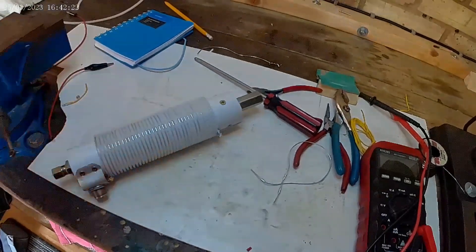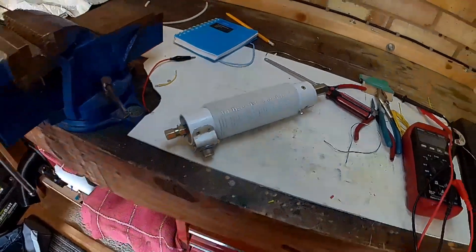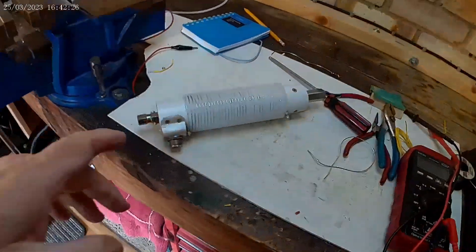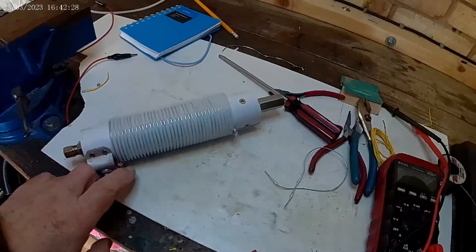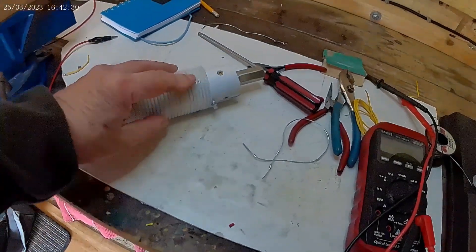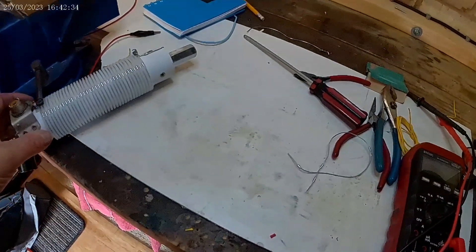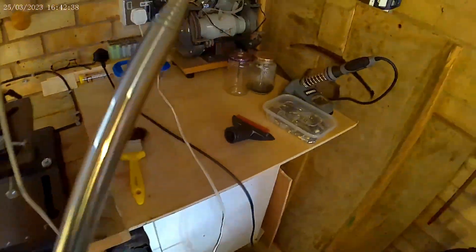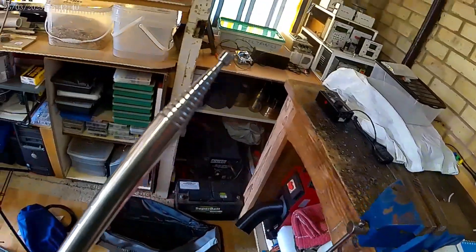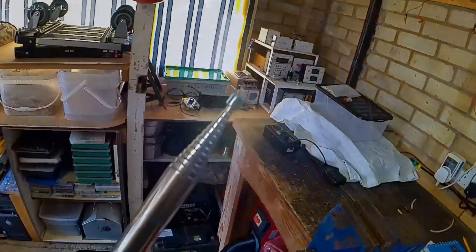For the 20 meter band, I've discovered you don't really need any taps. You just short it out, short the coil out completely, and then you just slide the sections here to suit your SWR.